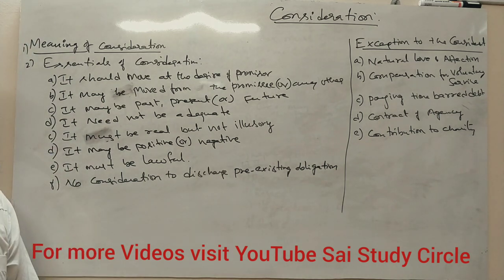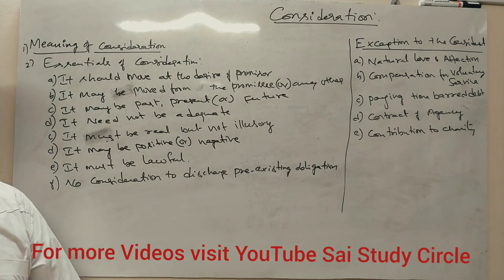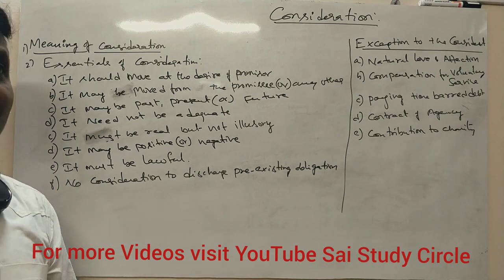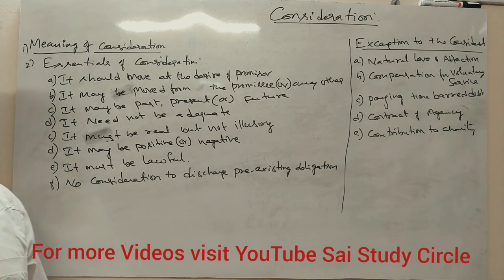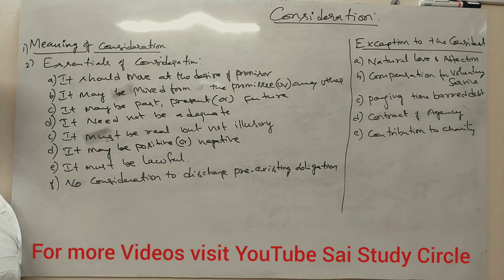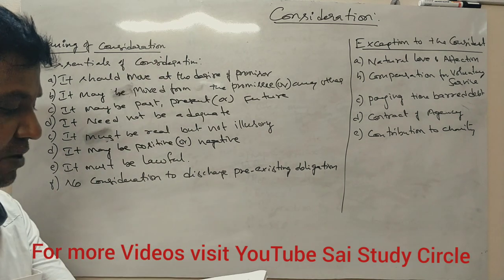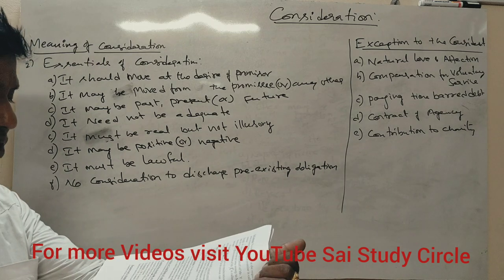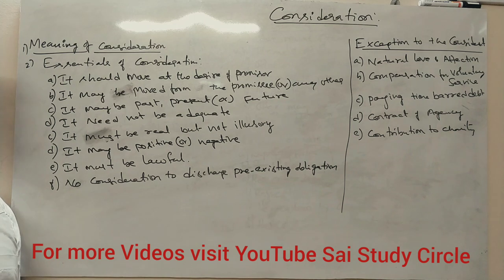What are the essentials of a valid consideration? The first one is it should move at the desire of the promisor. It should move at the desire of the promisor. This is why it is called something in return for the promisor.